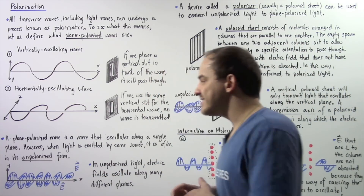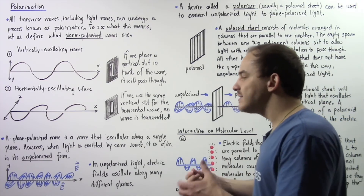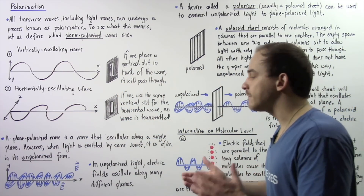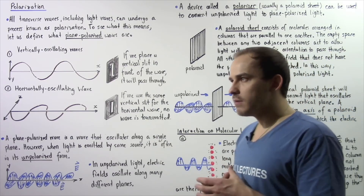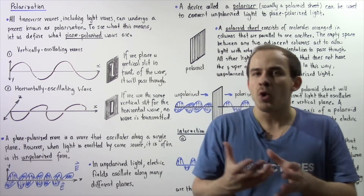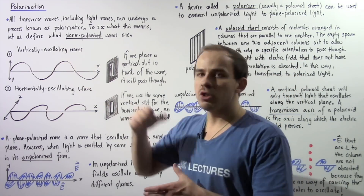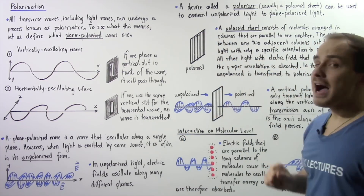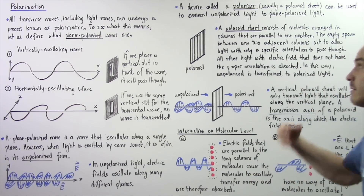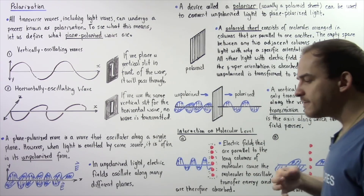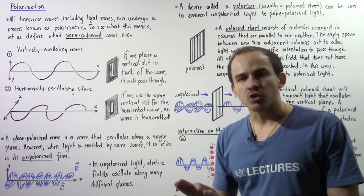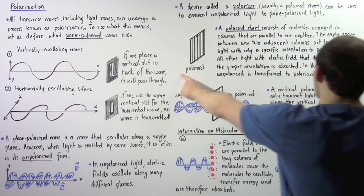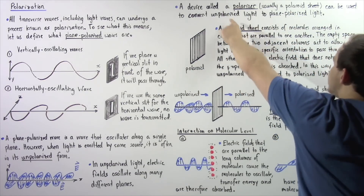This is one example of an unpolarized light wave — it contains electric fields oscillating along different axes and planes. The process of transforming an unpolarized wave into a polarized wave is known as polarization, and the device used is called a polarizer, typically a polaroid sheet.